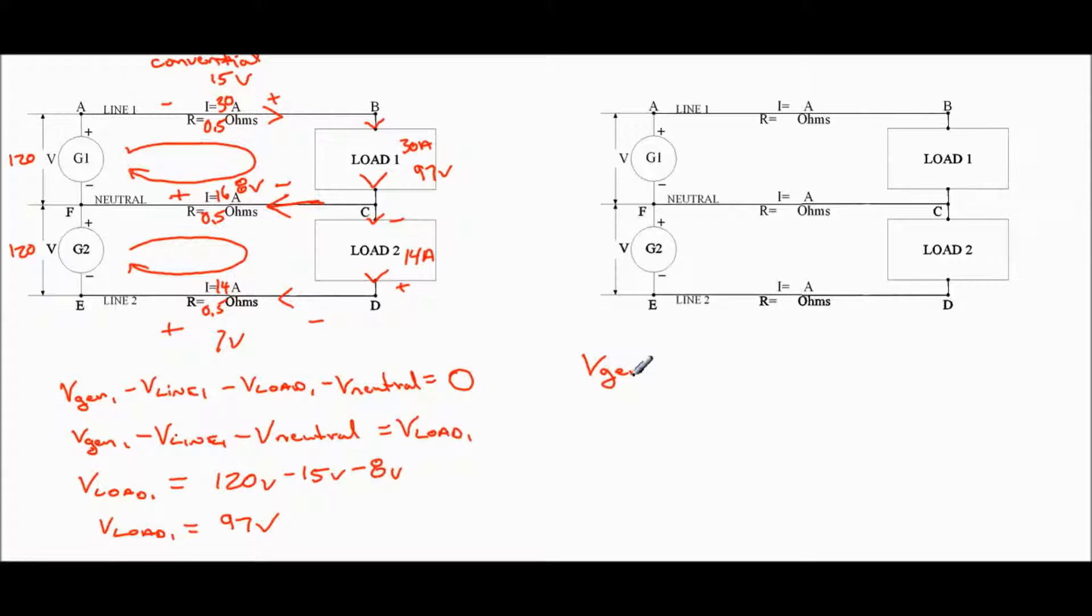The V gen 2. And in which case here, we're going this way now. The neutral. And you can see that it ends up being a rise. Plus, you can notice the positive here. So it'll be plus V neutral here. And then minus V load 2 minus V line 2 equals 0.